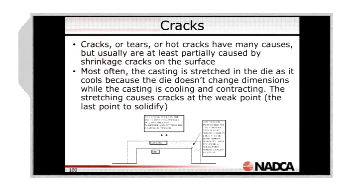Most often the casting is stretched in the die as it cools, because the die doesn't change dimensions — steel is strong. While the casting is cooling and contracting, the stretching causes cracks at the weakest point. The last place to solidify is where the aluminum or zinc hasn't totally frozen, or where it is still very, very weak. Hot cracks are a localized thermal effect, and it can be local.